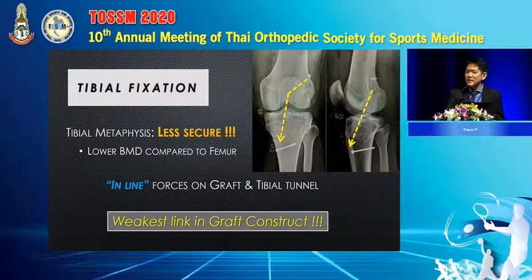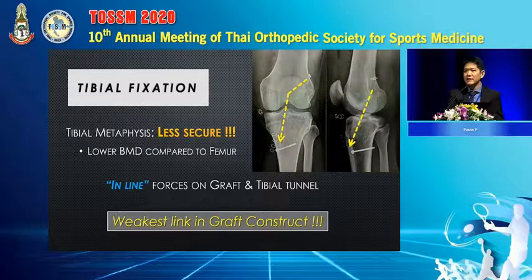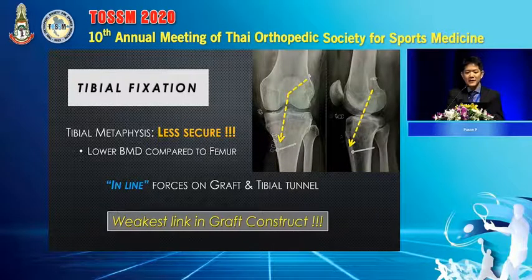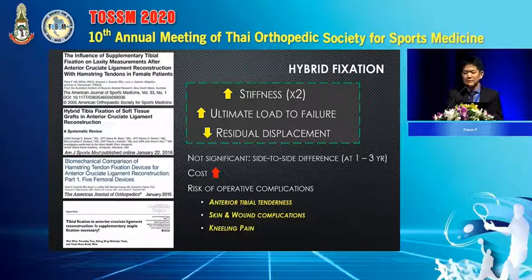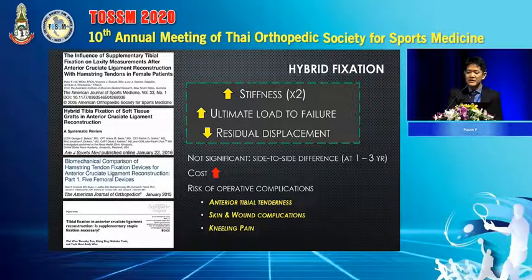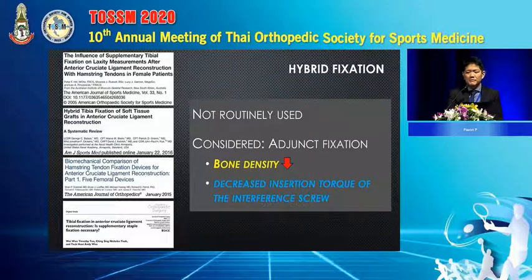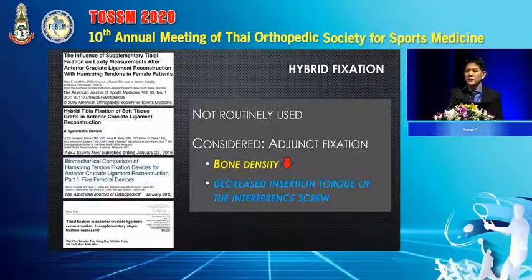The Hybrid Fixation. We want to consider this because some patients have lower bone mass density. The pull-out force of the tunnel and the graft are in-line, making proximal fixation the most on-axis for the ACL reconstruction. Comparing hybrid versus non-hybrid fixation, hybrid has greater stiffness and ultimate load-to-failure, and less residual displacement. However, there is no difference in side-to-side difference, and it adds cost and post-operative complications such as antero-lateral tenderness, skin wound complications, and kneeling pain. Therefore, we use adjunct hybrid fixation selectively — when bone mass density is low or when primary fixation feel is not sufficient.